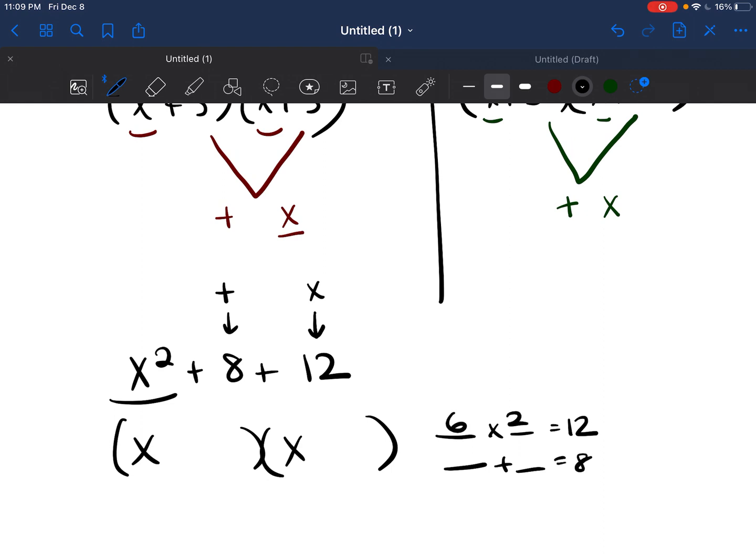Well, you can do 6 times 2 is 12, and 6 plus 2 is 8. So because those numbers both work out, the answer is going to be plus 6 and plus 2.